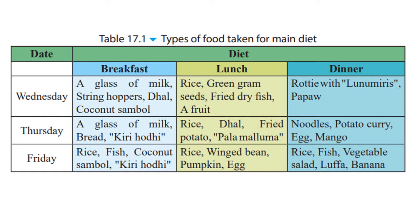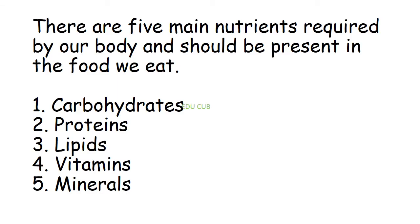Air, water, and food are the most essential for the existence of life. This table shows you the diet taken by a Grade 7 student over three days — Wednesday, Thursday, and Friday — divided into breakfast, lunch, and dinner. Here you can observe the food types the student has taken over three days, with different types of food mentioned in the table.